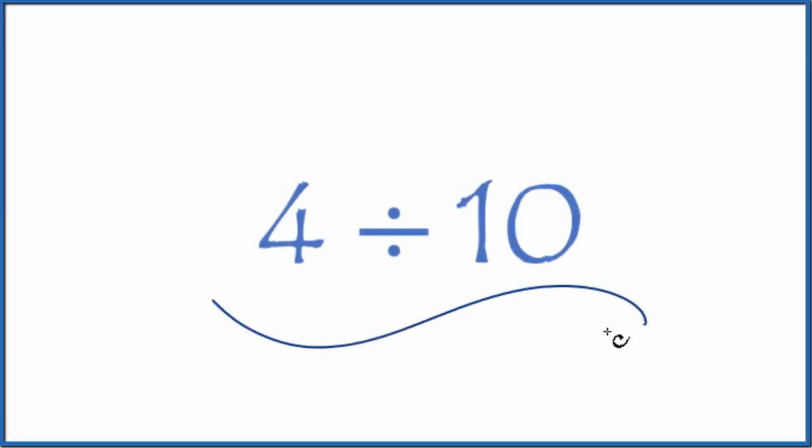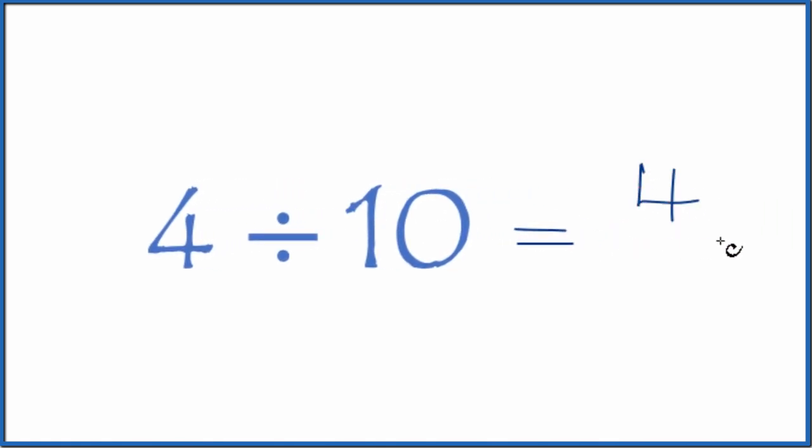If you need to divide 4 by 10, here's how you do it. Let's first think of it as a fraction. So 4 divided by 10, that's the same as 4 tenths.